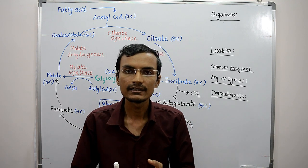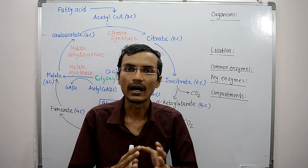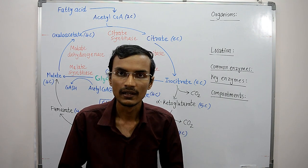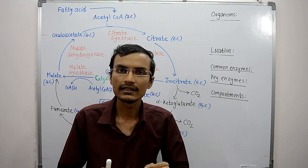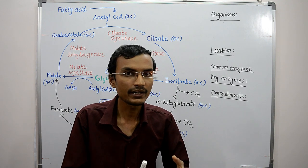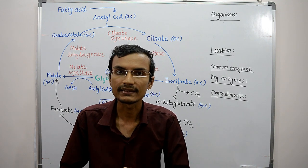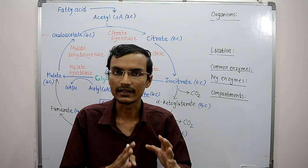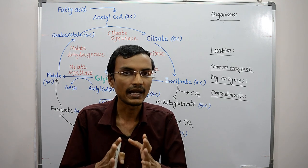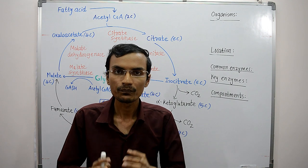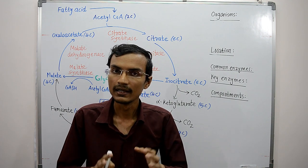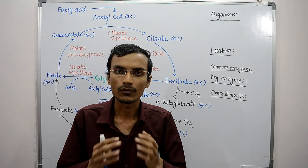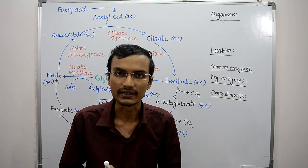The organisms in which this cycle occurs are plants, bacteria, protists, and fungi. These organisms can convert net carbohydrate from fatty acid without losing carbon atoms, and these organisms can also use acetate as a carbon source.